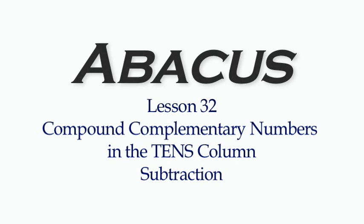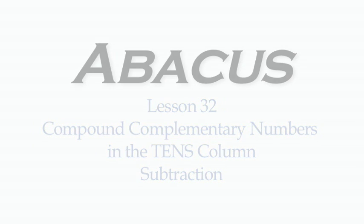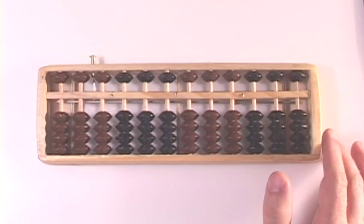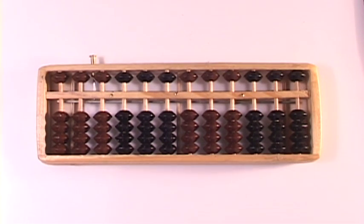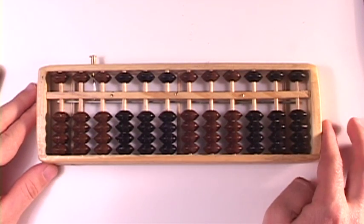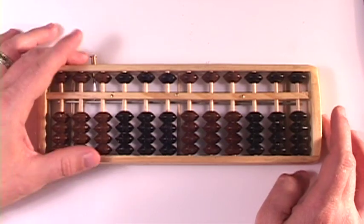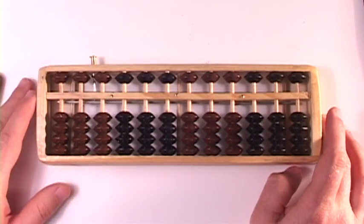Alright, looks like you're back for another round. This is lesson 32, subtraction using compound complementary numbers in the tens column. So here we go, let's just jump right into it because you're so excited to do this you probably don't want to waste any time.